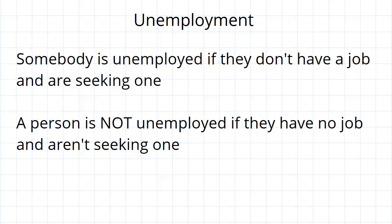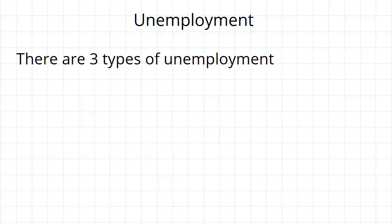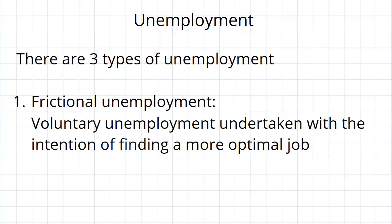Now let's get on to the three types of unemployment. The first is what's called frictional unemployment. This is voluntary, meaning that people choose to undergo this type of unemployment, and they do so because they are trying to find a more optimal job. This could be somebody quitting their job and then going out and trying to find a better one, because they simply felt that the job they were working at was not right for them.